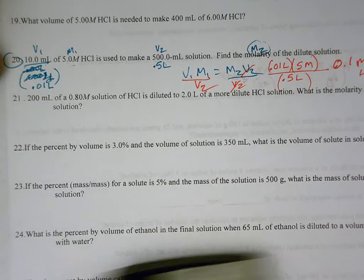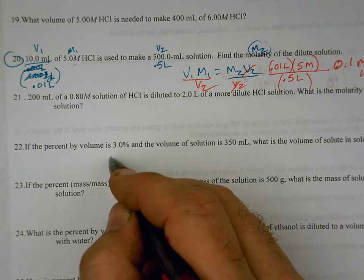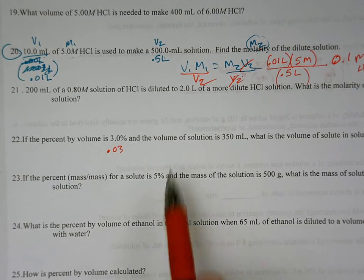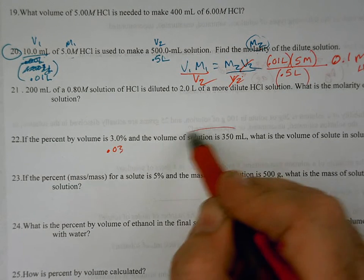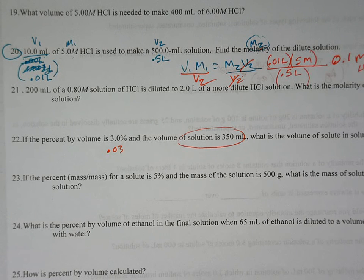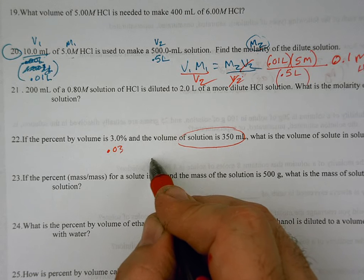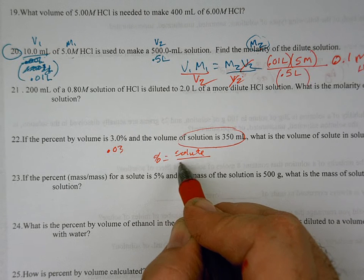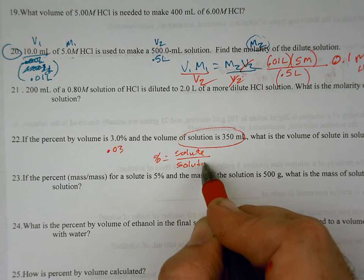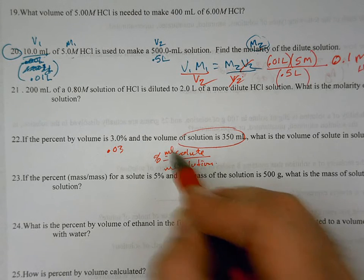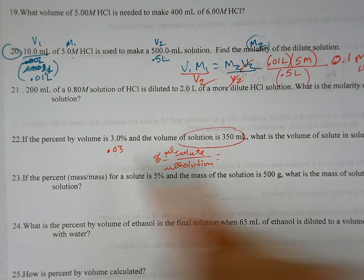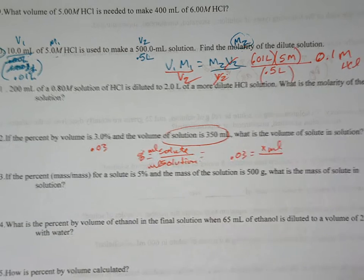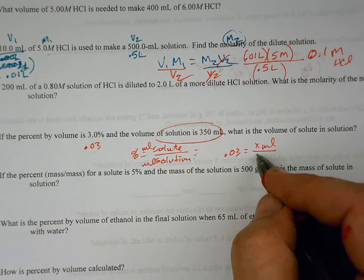Question number 22. If the percent volume is 3%, we're going to just make that 0.03 right away just to save us a step when we do those problems. And the volume of the solution is 350. This is the total solution. What is the volume of the solute? Our base equation is going to be your percentage is equal to solute divided by solution. And actually, in this case, it'll be milliliters of solution and milliliters of solute. So I've already converted this to 0.03 will be equal to x milliliters of solute. And they're telling us the total solution is 350 milliliters.